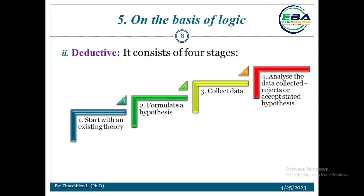Deductive reasoning follows four stages. The first stage is that it starts with an existing theory — as we have seen, if there is no theory, we will not follow a deductive approach. The second stage is to formulate a hypothesis based on the existing theory. The third stage is to collect data in order to test the stated hypothesis.